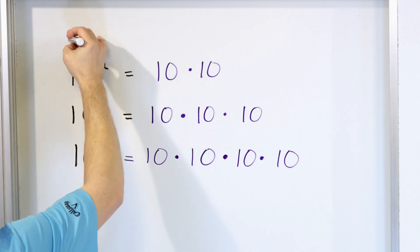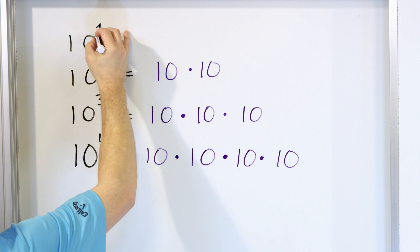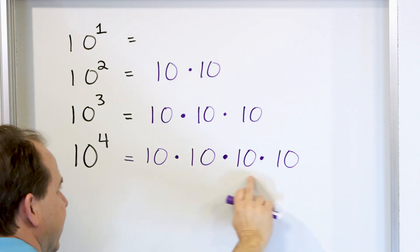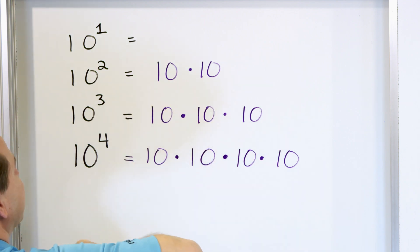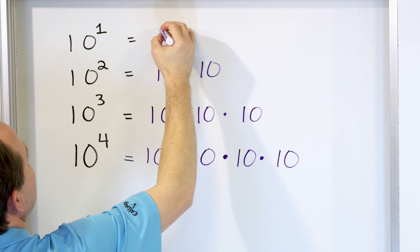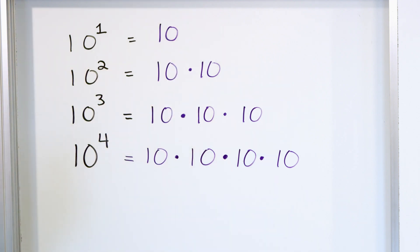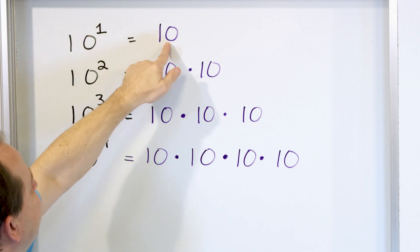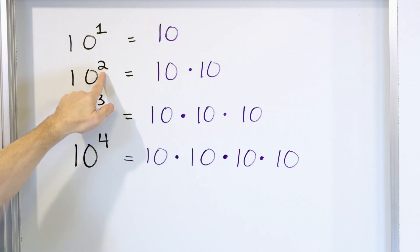Finally, what happens if you take 10 and we have a power of 1? If 10^4 is four 10s multiplied together, 10^3 is three, and 10^2 is two, then 10 raised to the power of 1 is just 10. When you have anything raised to the first power, it's just the same number.